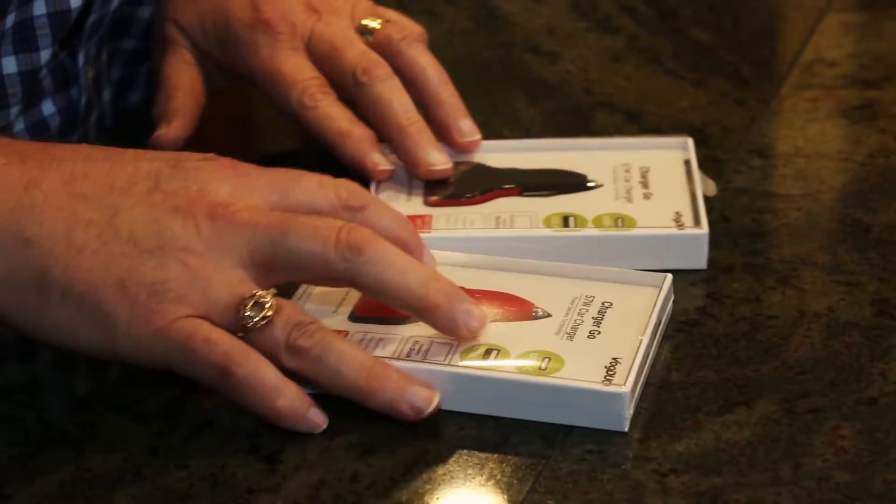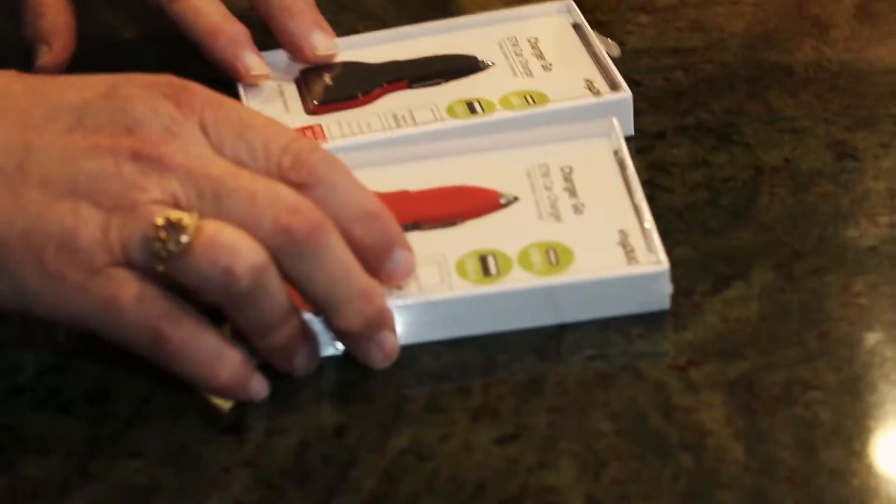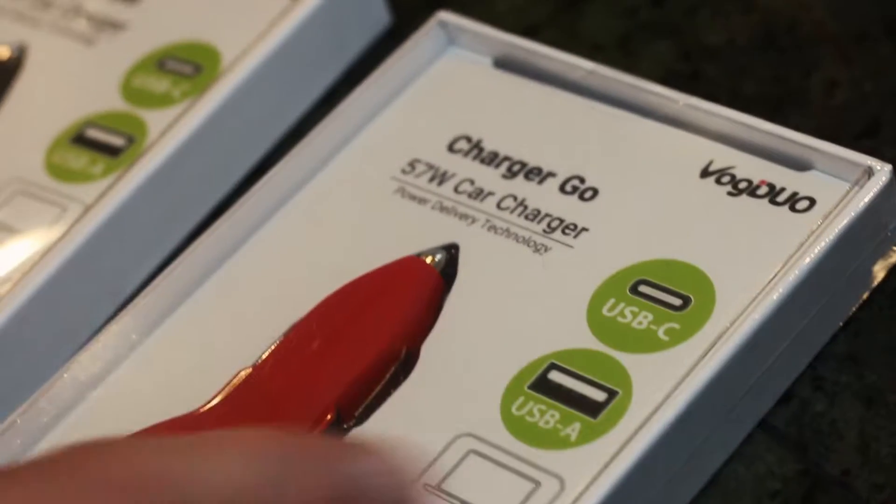Alright, so here we have two versions of the Vogue Dual Charger Go, which is a 57-watt car charger. It allows you to charge a MacBook, as it says there,